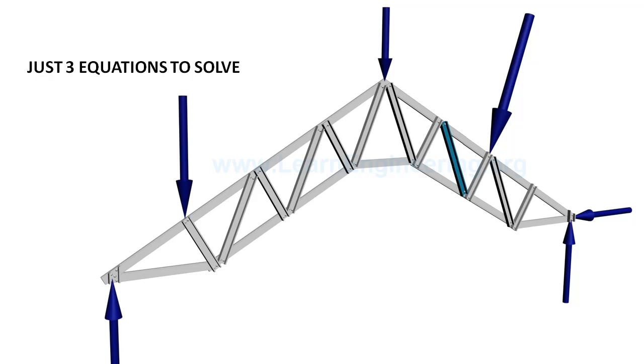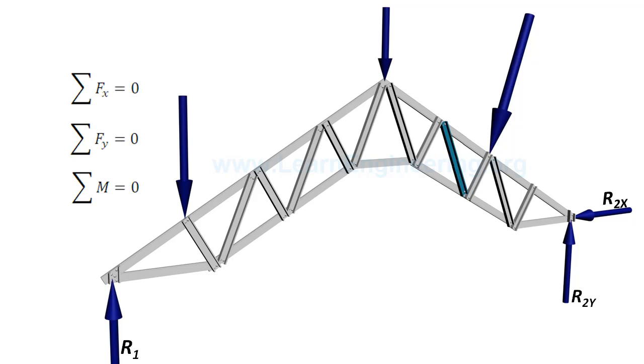Steps involved in method of sections are as follows. First step, determination of reaction forces. We can use three equilibrium equations of truss to find this, but for cantilever truss you can skip this step.